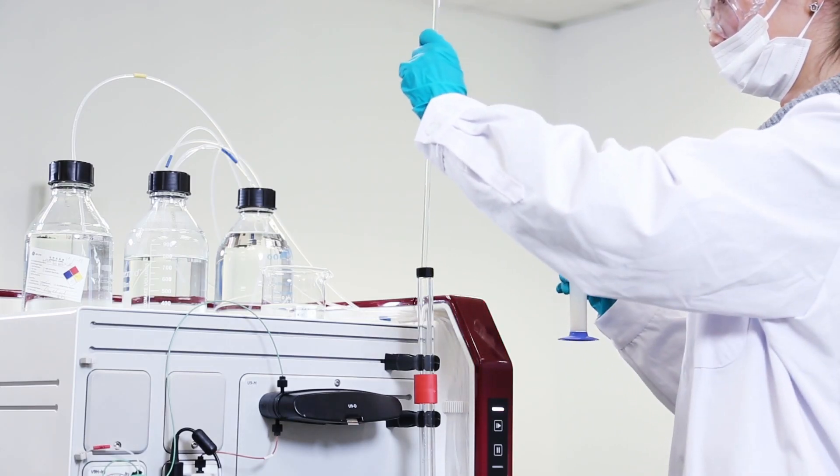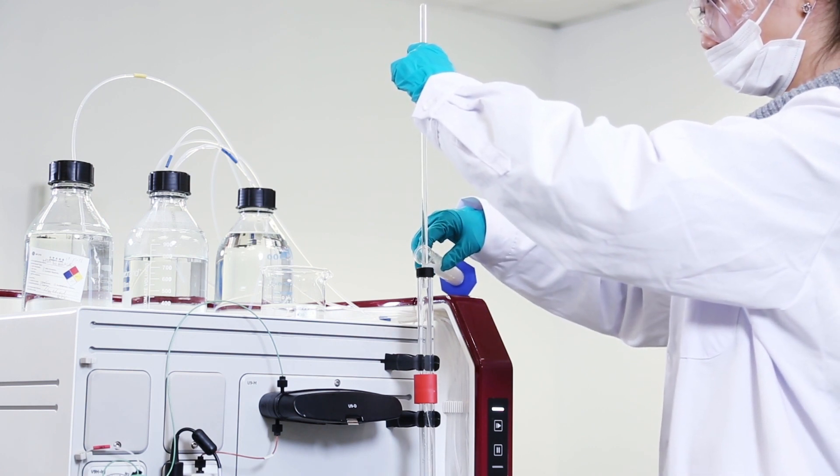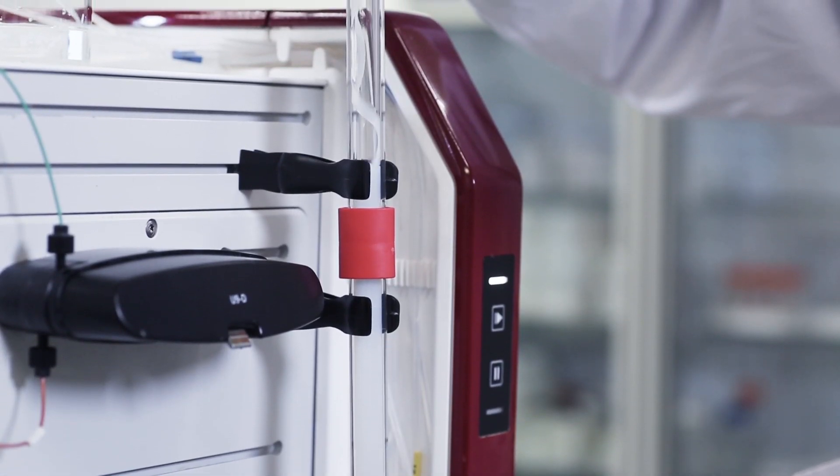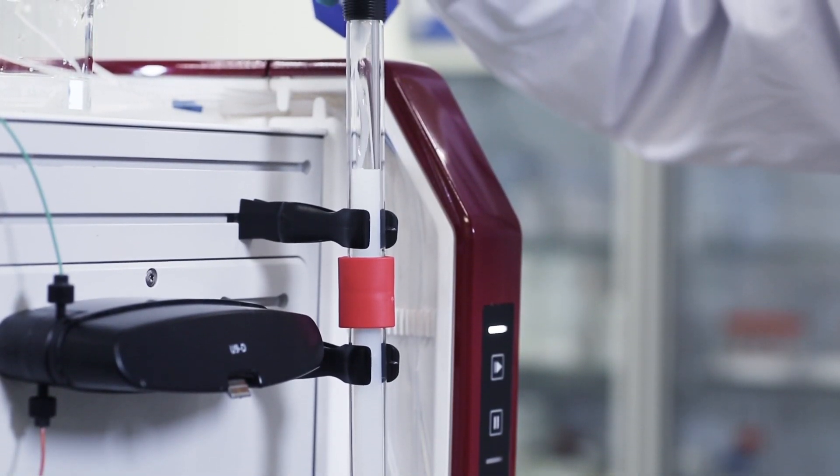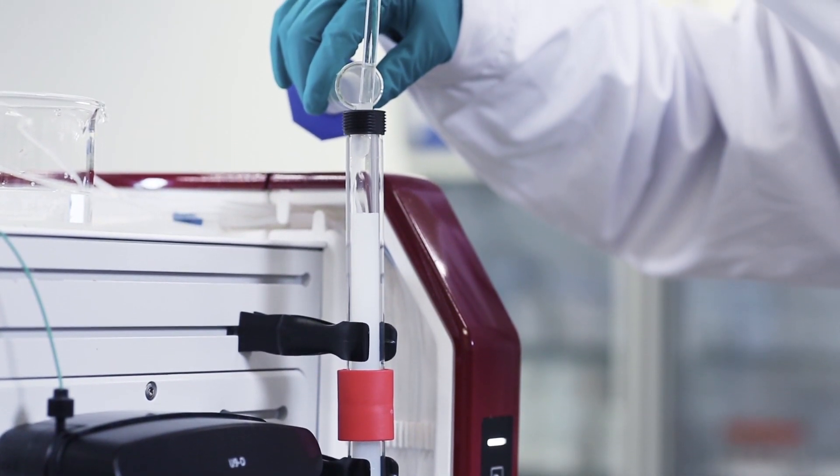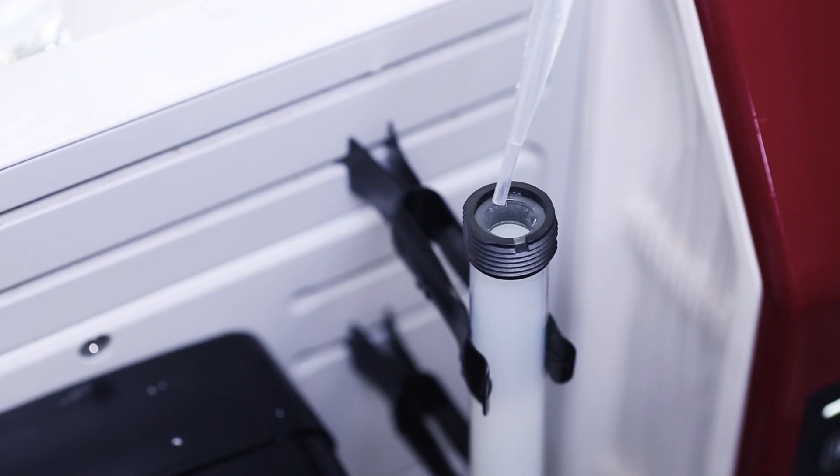Begin packing the column by remixing the resin slurry to ensure homogeneity. Pour the slurry down a glass rod or spatula held against the wall into the column. This will minimize the formation of air bubbles. It is crucial to pour all the resin at once without stopping.